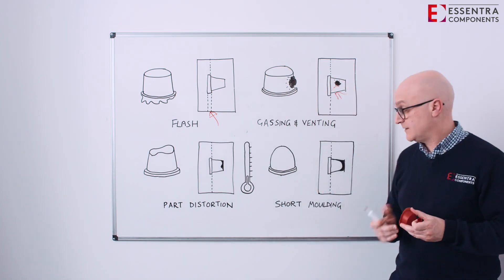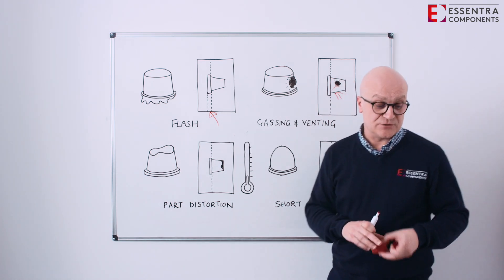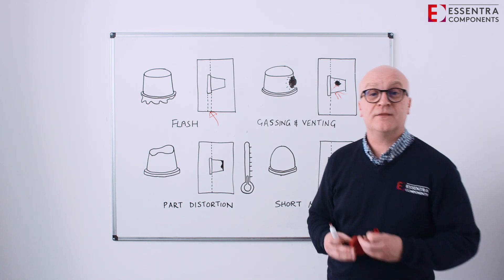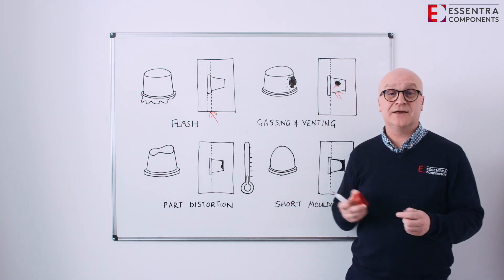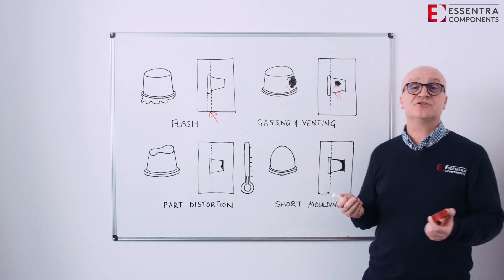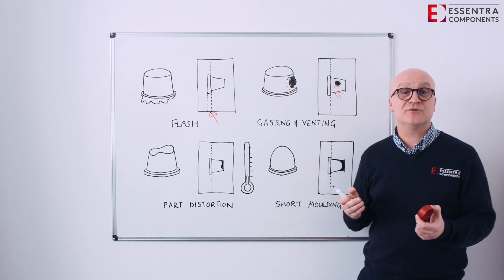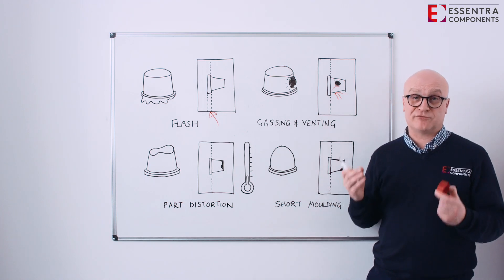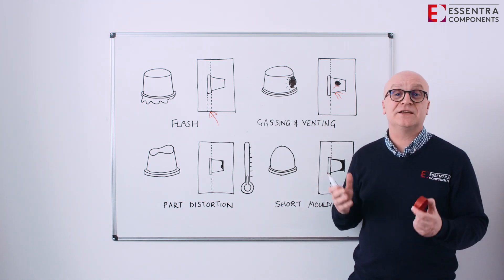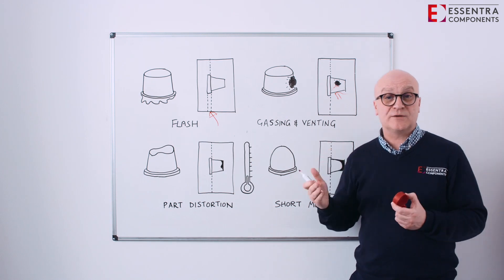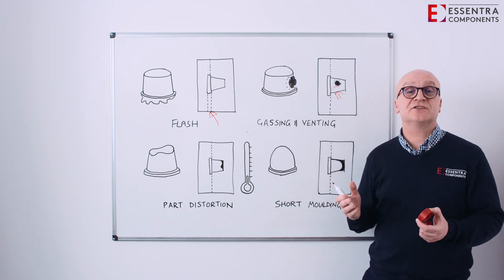Then we go on to our last one and we take a look at short mouldings. Short mouldings occur when we've not filled the part correctly. The main reasons for this are temperature related — we need to make sure we have the correct temperatures that the material requires to process and flow correctly into the tool. We also need to make sure we've got the correct holding pressures and injection pressures. It's highly critical.